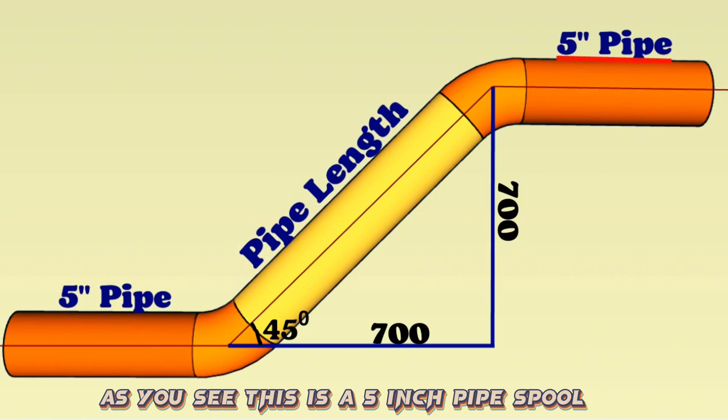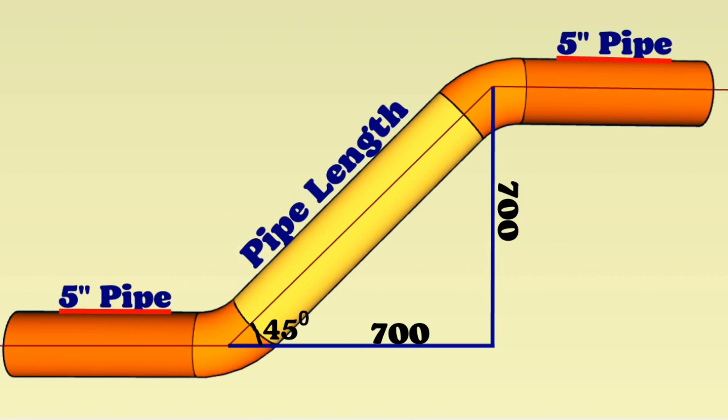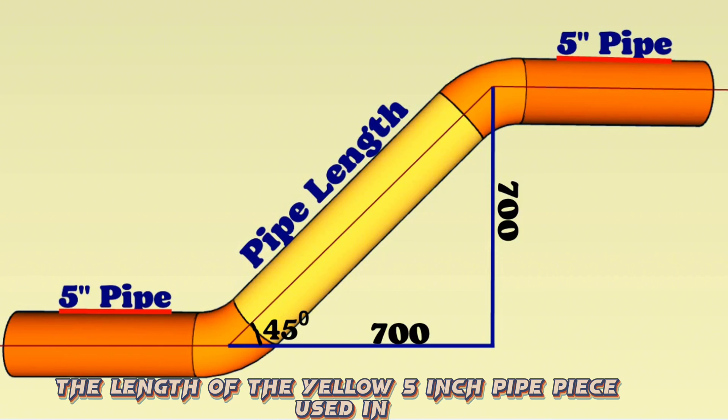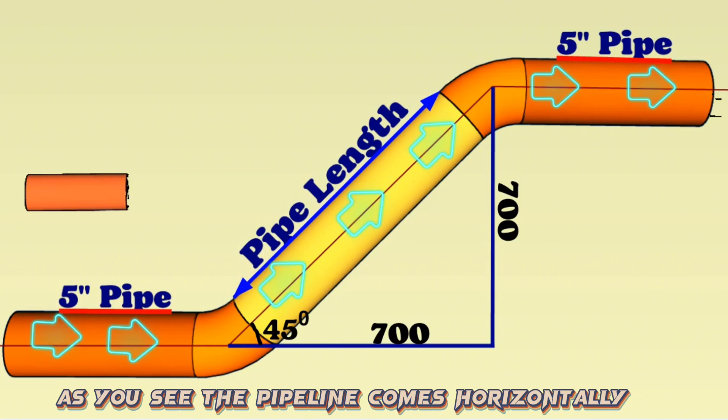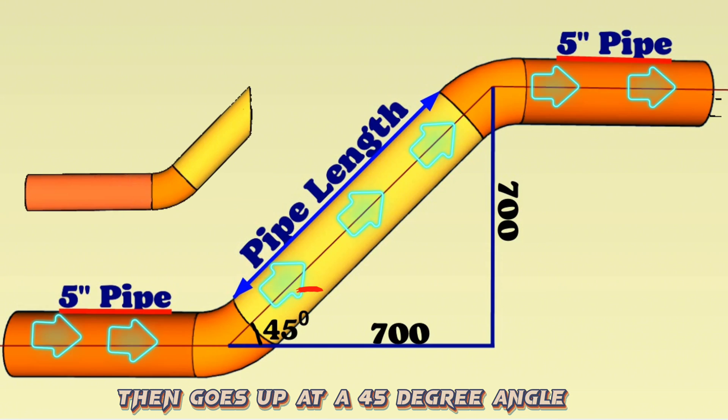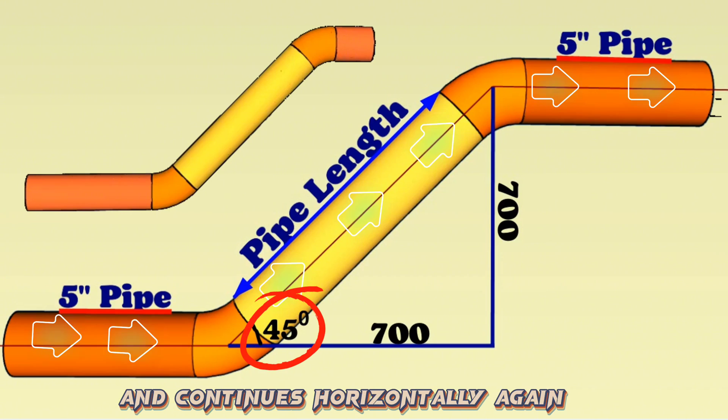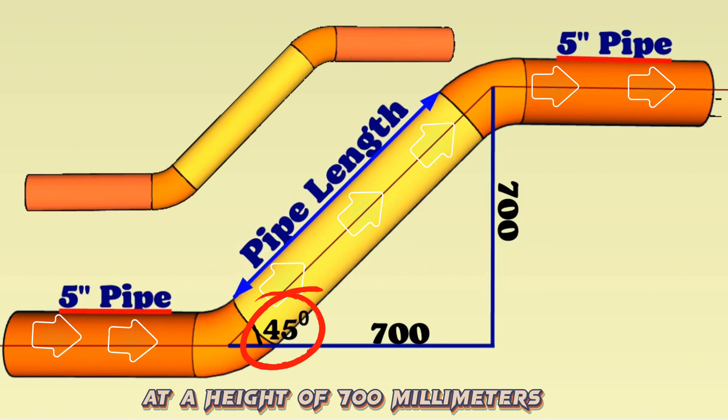As you see this is a 5-inch pipe spool. We need to calculate the length of the yellow 5-inch pipe piece used in the fabricate of this pipeline. The pipeline comes horizontally, then goes up at a 45-degree angle and continues horizontally again at a height of 700 millimeters.